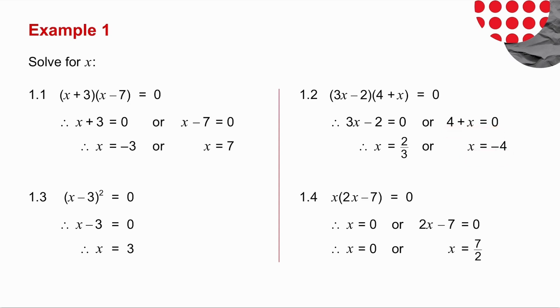Number 1.3, I've got a bracket squared equal to 0. Well, what times itself is equal to 0? It has to be 0. So x minus 3 must be equal to 0. In other words, x is equal to 3.